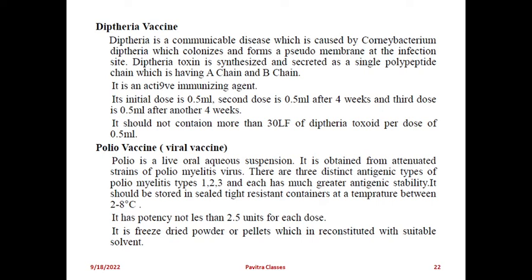The polio vaccine is a live oral aqueous suspension obtained from attenuated strains of poliovirus. There are three distinct antigen types: poliomyelitis types 1, 2, and 3, each with greater antigen stability. It should be stored in a sealed tight-resistant container to prevent oxidation, at a temperature between 2 to 18 degrees Celsius. It has a potency of not less than 2.5 units per dose and is a pre-dried powder or pellets reconstituted with a suitable solvent.